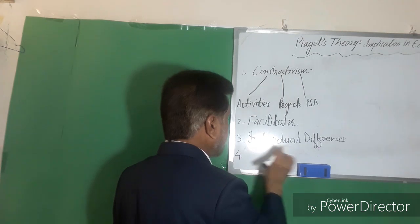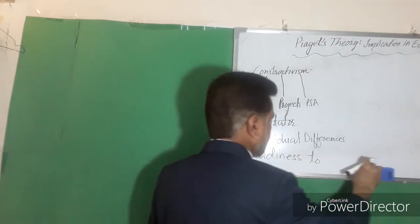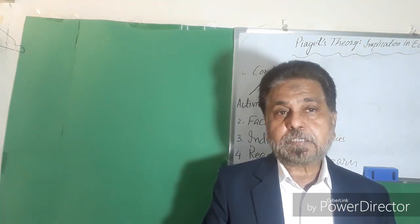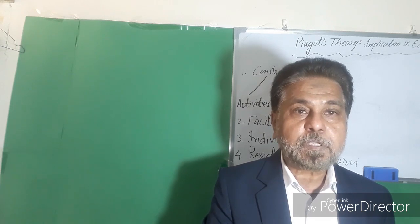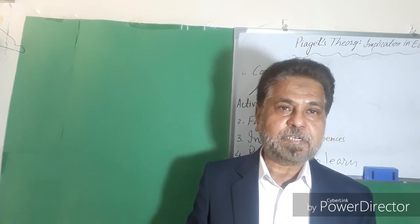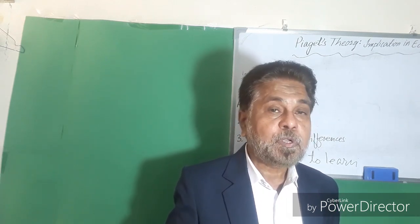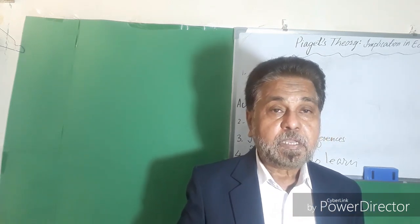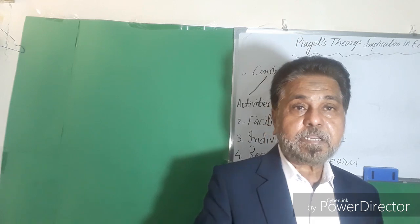Number four is readiness to learn. A stage 3 student is not cognitively ready to learn something beyond their capacity or abilities, but a stage 4 student is ready to think logically, make abstractions, and form hypotheses. Stage 3 students are not yet ready to make hypotheses or imagine abstract concepts. Therefore, the teacher's main role is to design activities according to each student's stage and readiness to learn.